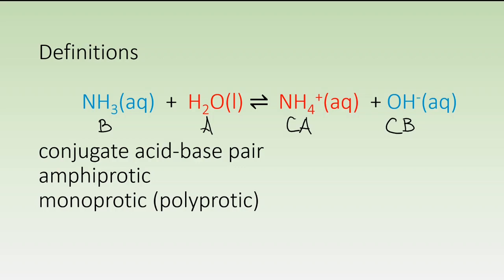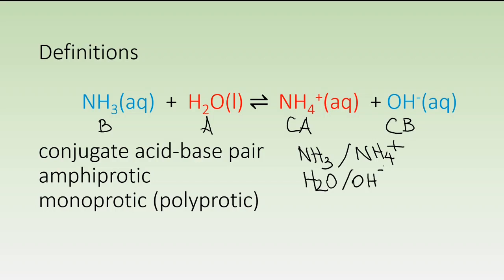This gives us the definition of a conjugate acid-base pair: a set of chemicals that differ by one proton. Every Bronsted-Lowry reaction has two conjugate acid-base pairs. One of those is ammonia aqueous paired off with ammonium ion, which differs by one proton. The other conjugate acid-base pair would be water and hydroxide ion. That's a fairly important definition for us to consider.